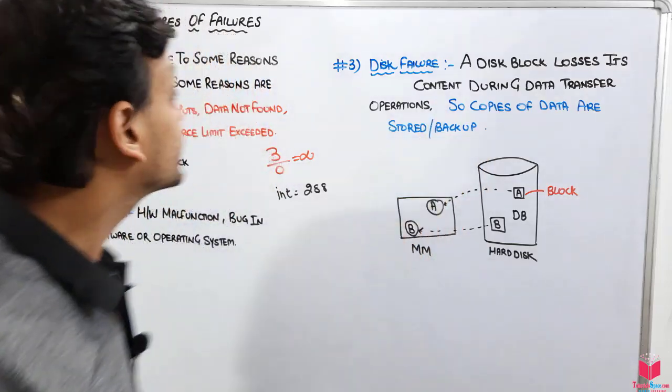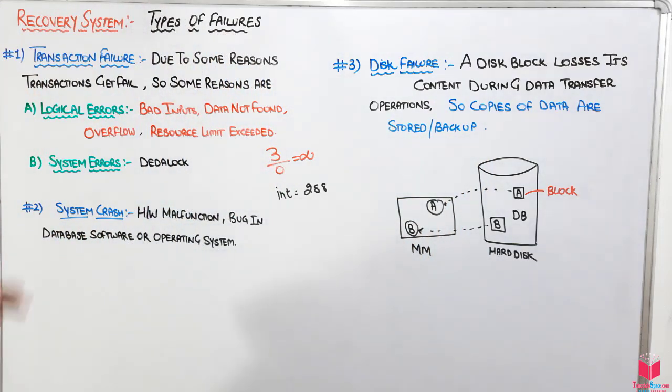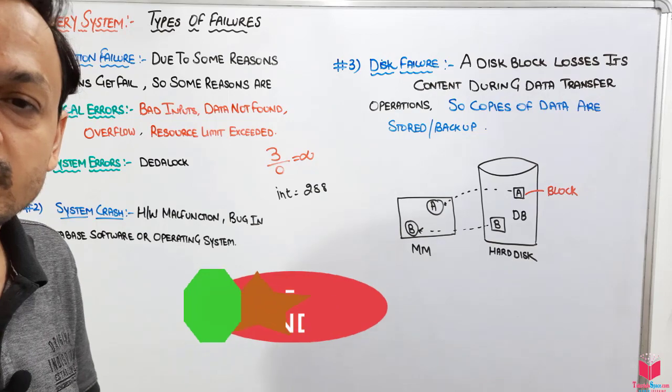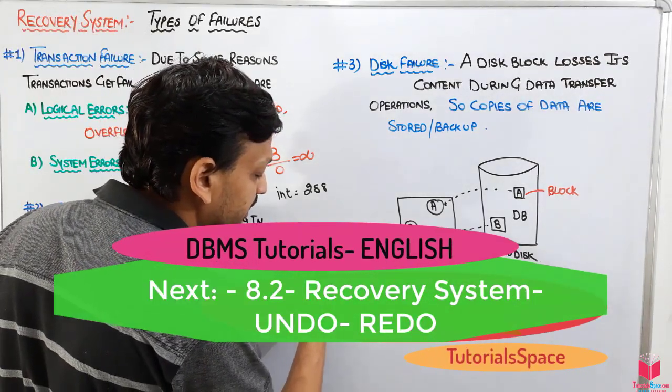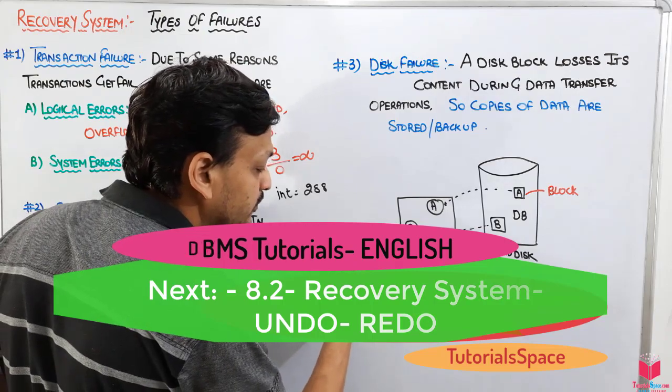So if there is a disk block loss, we will transfer that value from the stored variable or from the backup. This is all about the types of failure. In the next video we will discuss two topics, that is redo and undo.